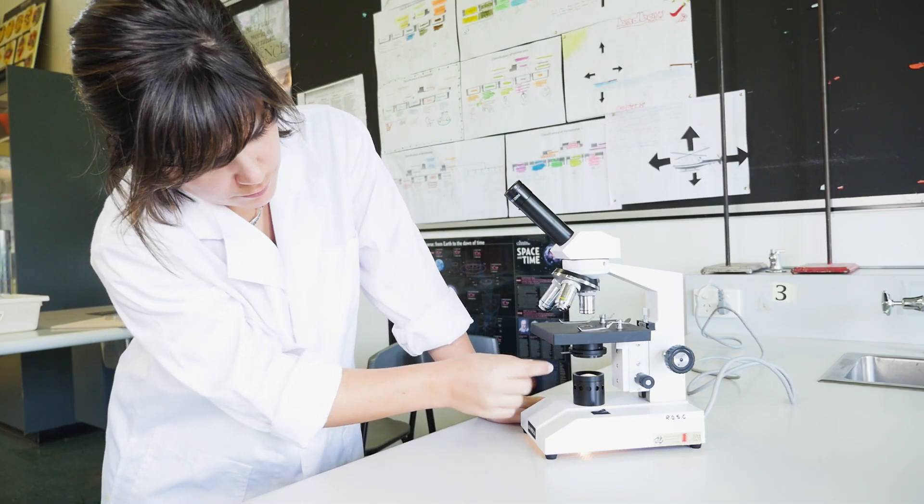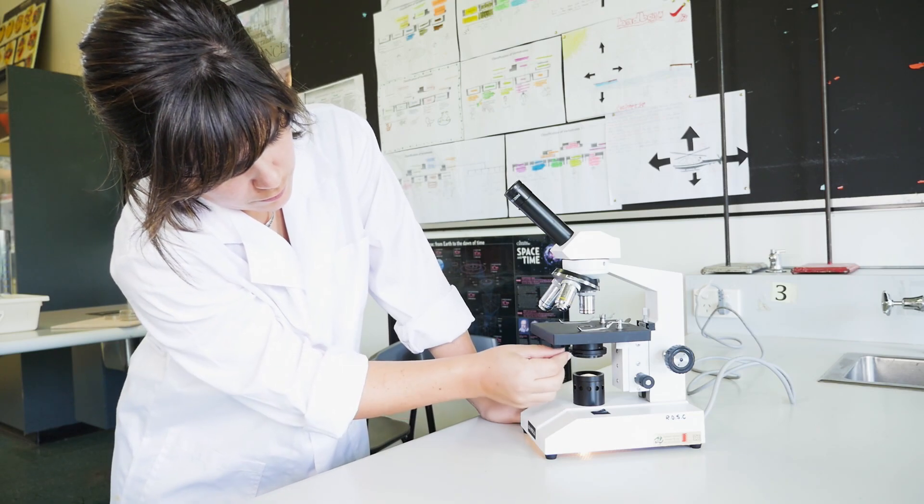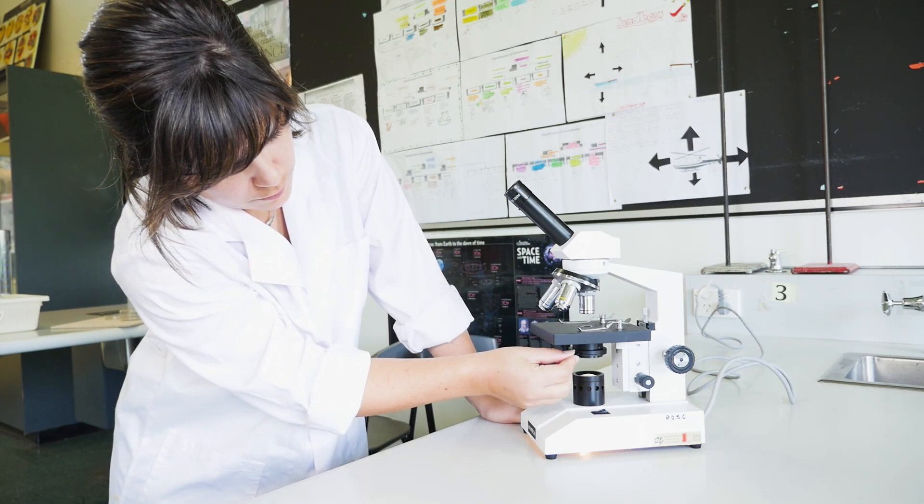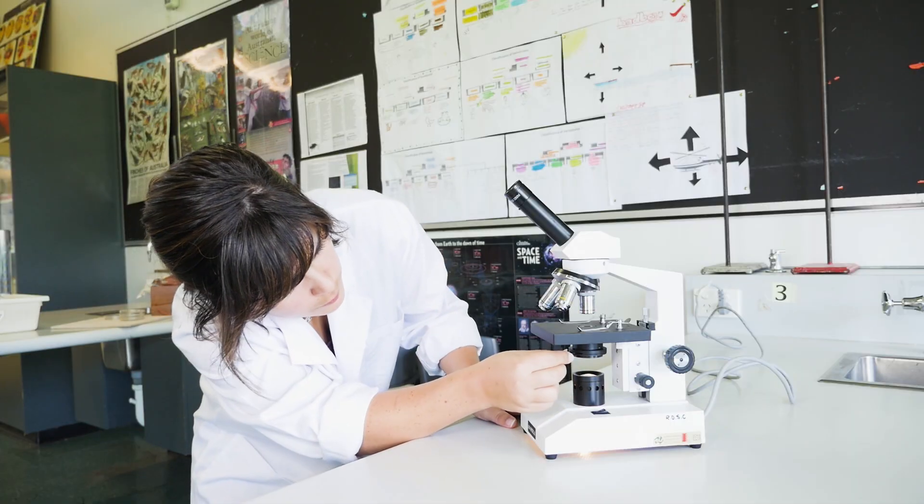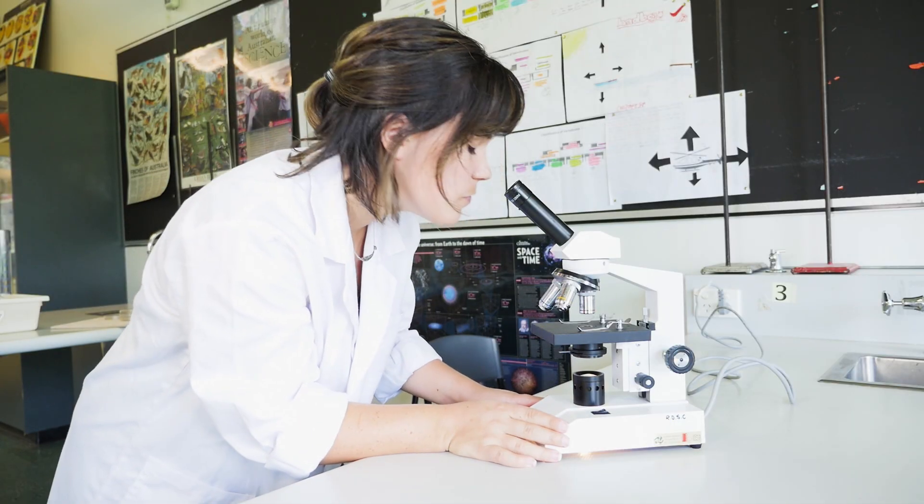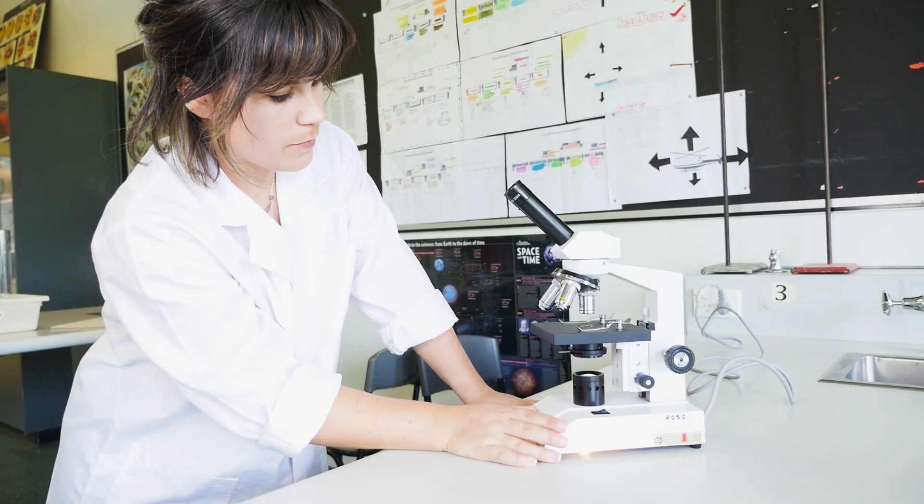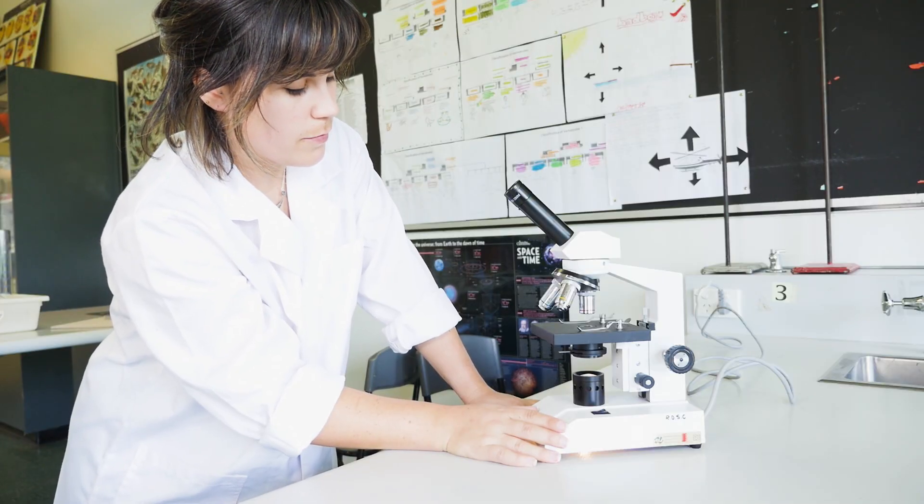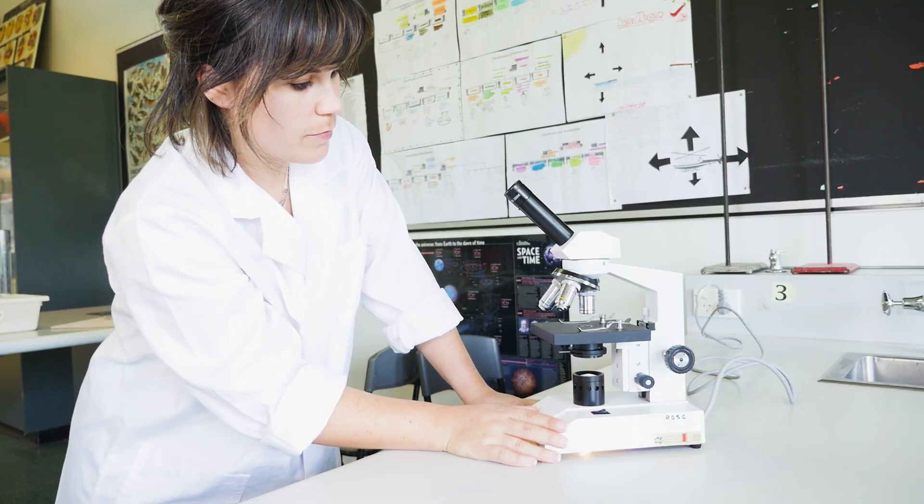Here's the diaphragm. Opening it lets more light in and closing it will make the image darker. Use the lever to adjust it so that a medium amount of light passes through the hole in the stage. You can readjust the light later to improve the image. Remember, the brightest light doesn't necessarily give the best image.